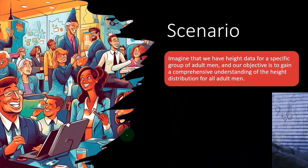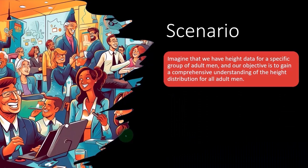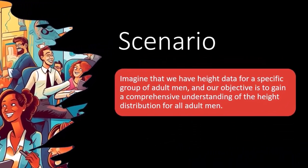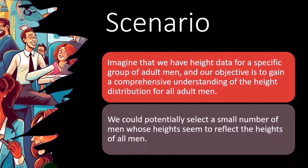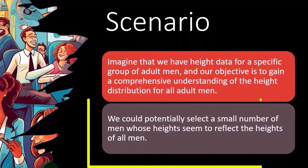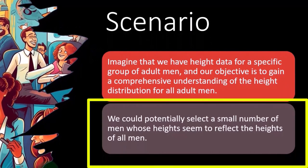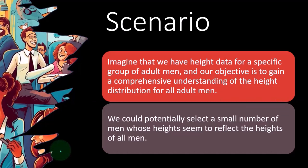We could potentially select a small number of men whose heights seem to reflect the heights of all men. If I was to take a sample, the question will then be: how am I going to take a sample of men? I can't test all men in the population to see what the average height is, but what I could do is take a sample.